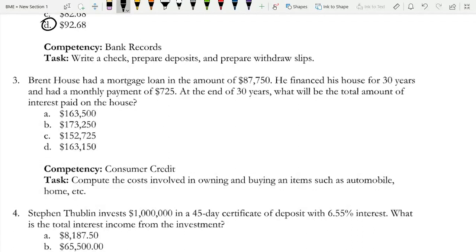Brent House had a mortgage loan in the amount of $87,750. He financed the house for 30 years and had a monthly payment of $725. At the end of 30 years, what will be the total amount of interest paid on the house?